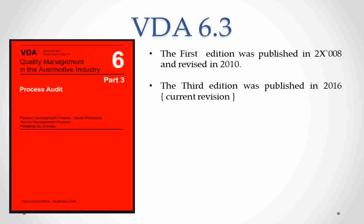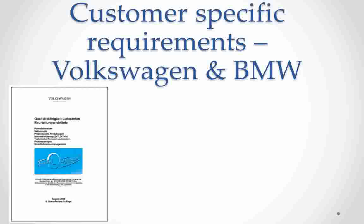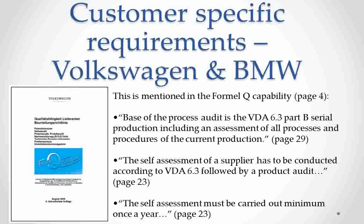It helps us to evaluate and improve the controls in our manufacturing process. The good part of the standard is that it can be used by any size and type of organization, for either internal process audit or for evaluating potential or existing suppliers. VDA 6.3 is a customer specific requirement for Volkswagen and BMW. For example, for VW there is a formal Q manual which talks about various quality requirements applicable to suppliers, and at various sections it calls for application of VDA 6.3 requirements across the supplier base.